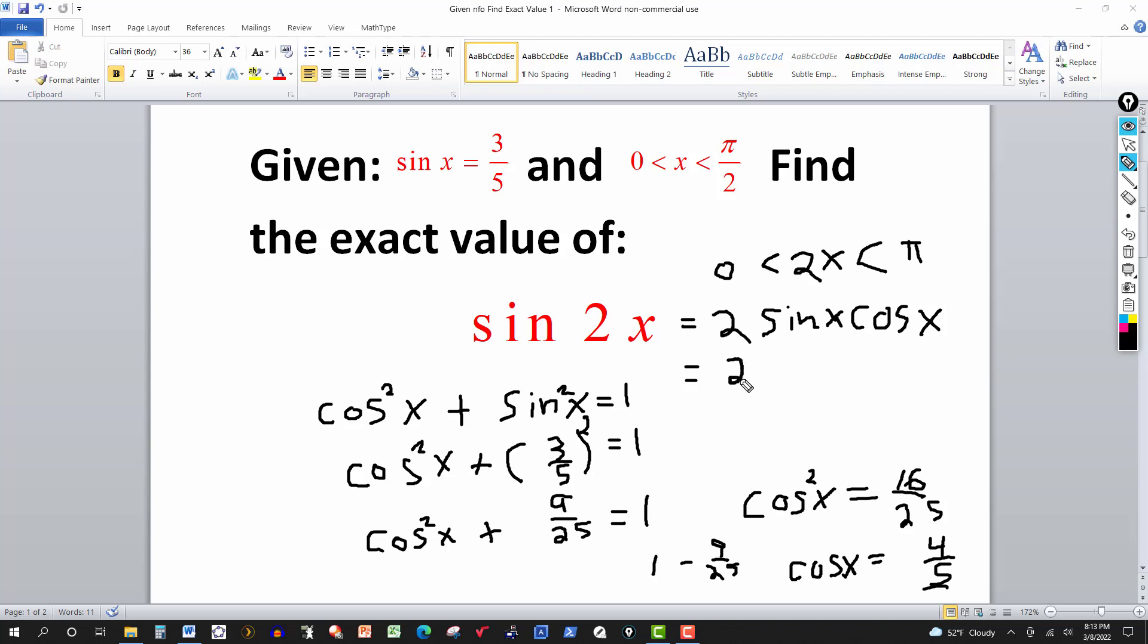So this is 2, and sine of x is 3-fifths, and cosine of x is 4-fifths. And notice, we need to get a positive result here.